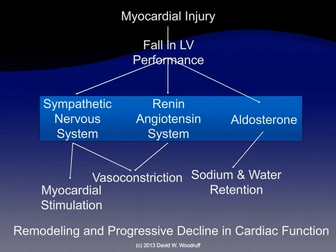Now think about this again. If we have a myocardium that is injured and we already have a decrease in our left ventricular performance, are these things really going to help? The myocardial stimulation is going to tell the heart to beat harder and faster — well, don't you think it would have if it could have? That's probably not going to be very helpful. The vasoconstriction is like clamping the tubing, so it's going to make it harder for the heart to pump. The aldosterone system is going to tell the kidneys to hang on to fluid.